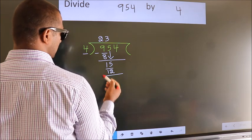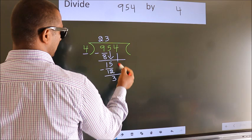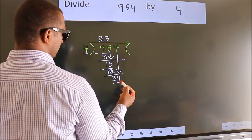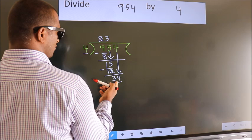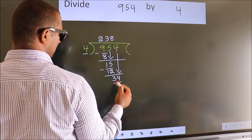Now, we subtract. We get 3. After this, bring down the beside number. So, 4 down. 34. A number close to 34 in 4 table is 4 eighths, 32.